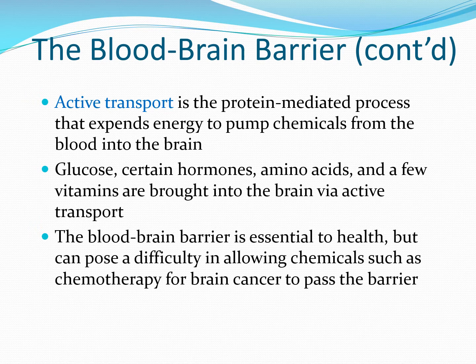The active transport systems are protein-mediated processes — we use energy to pump chemicals from the blood into the brain. We have a system for glucose since the brain needs it, but it needs other things as well. An active transport system allows passage of certain hormones, amino acids, and a few vitamins. Importantly, vitamin B1 or thiamine allows neurons to metabolize glucose. All of those are brought to the brain by active transport, something that really takes energy.